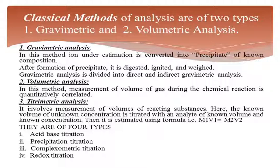In gravimetric analysis, the component under estimation is converted into a precipitate of known composition. Whatever component you have of unknown composition or concentration, first you convert it into a known amount of precipitate. After formation of the precipitate, it is digested, ignited, and finally weighed. After weighing, you perform calculations to find out its concentration. Gravimetric analysis is divided into direct and indirect gravimetric analysis.